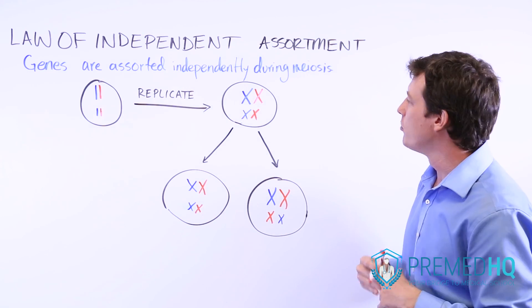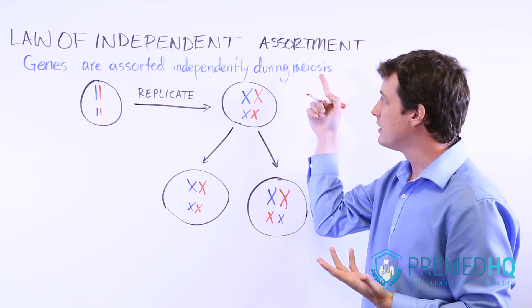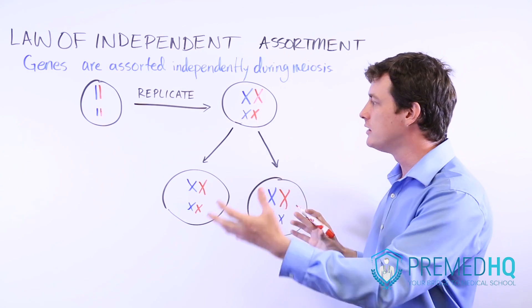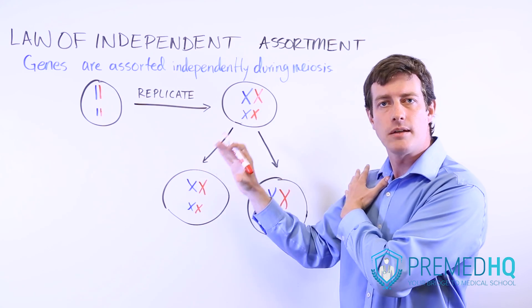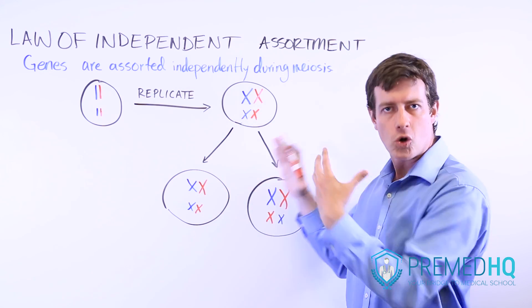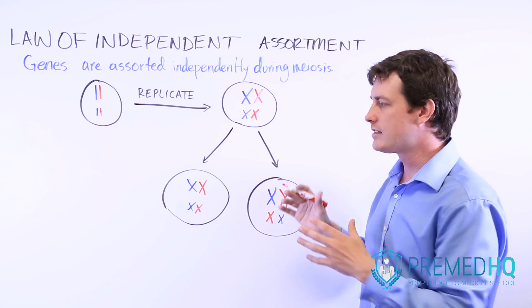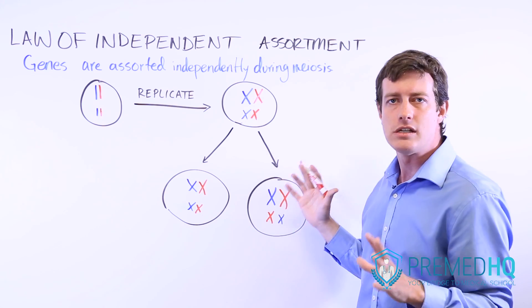And so in the formation of gametes there is independent assortment of alleles, and alleles can end up in the same daughter gamete or they can end up in separate gametes with just as equal frequency.